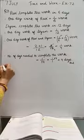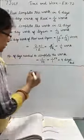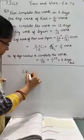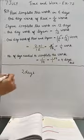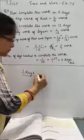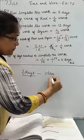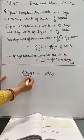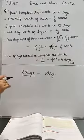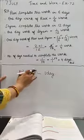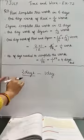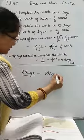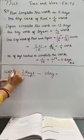My first question is: if you need to complete a work in 2 days, then how much work will be completed in 1 day? If you are taking 2 days to complete any work, then in 1 day you will complete half the work.